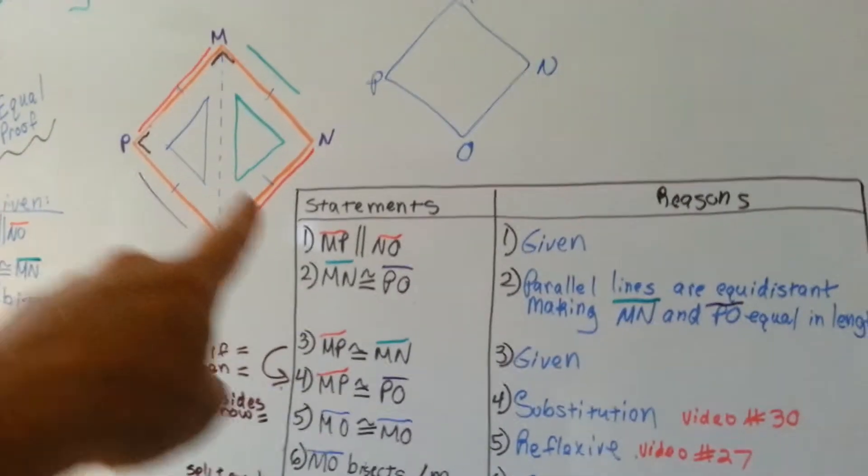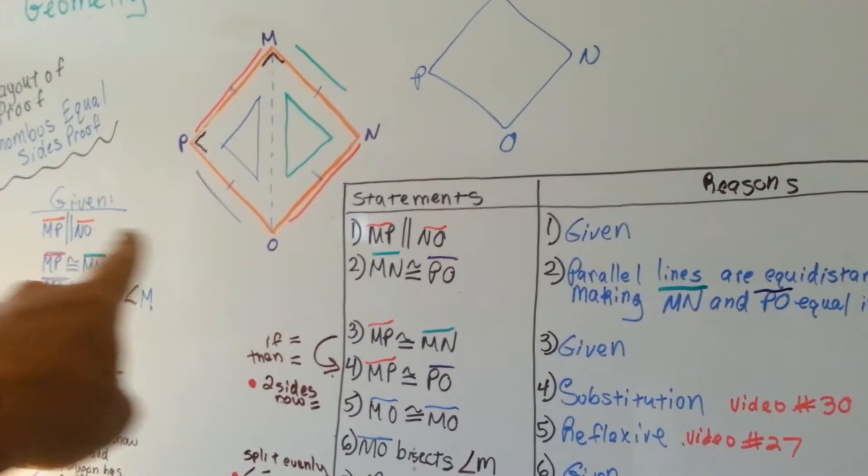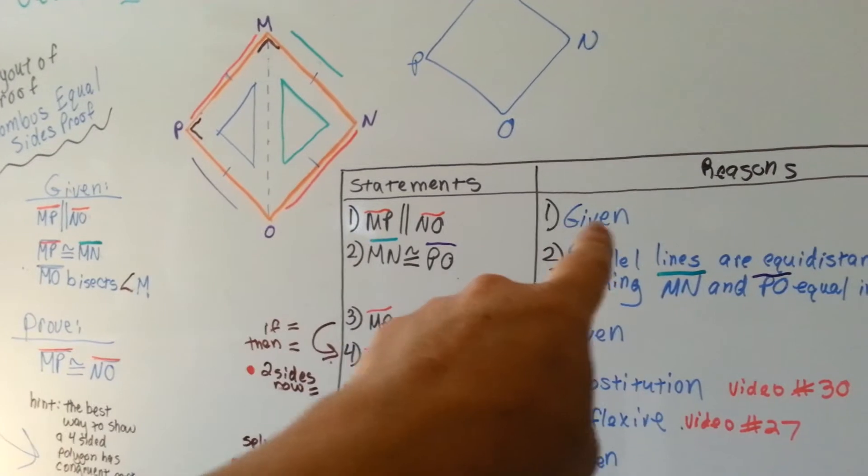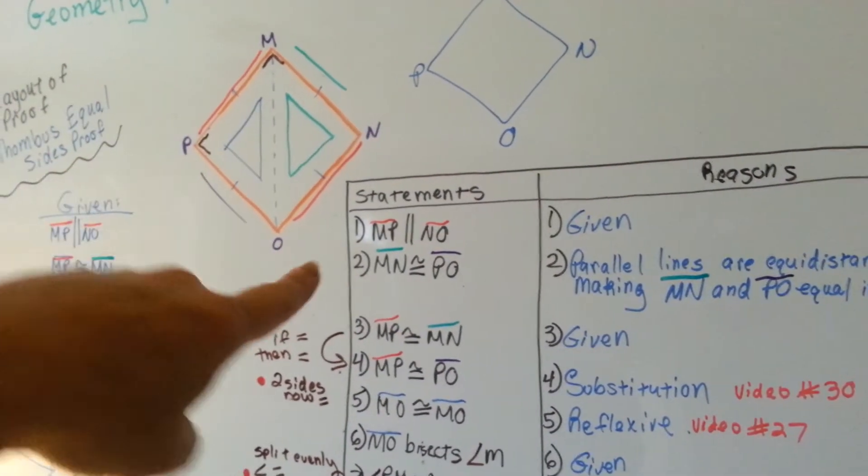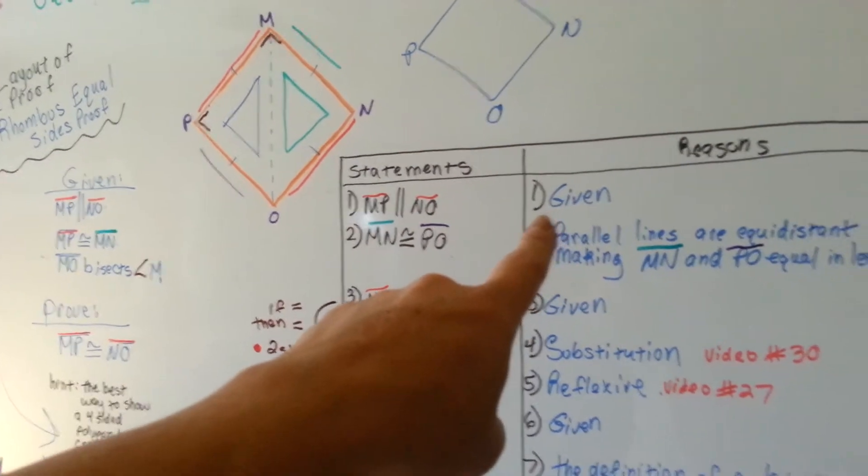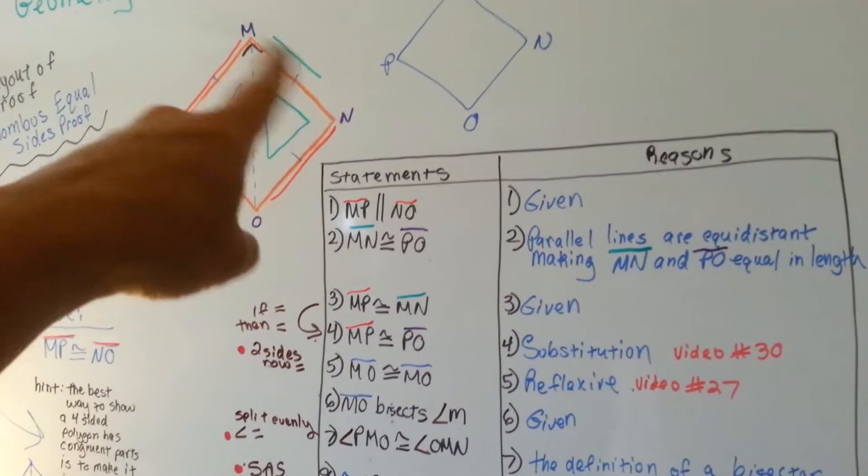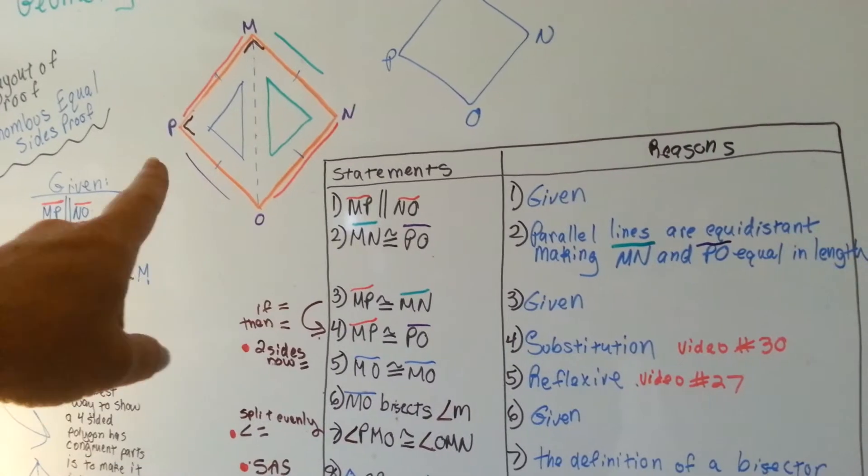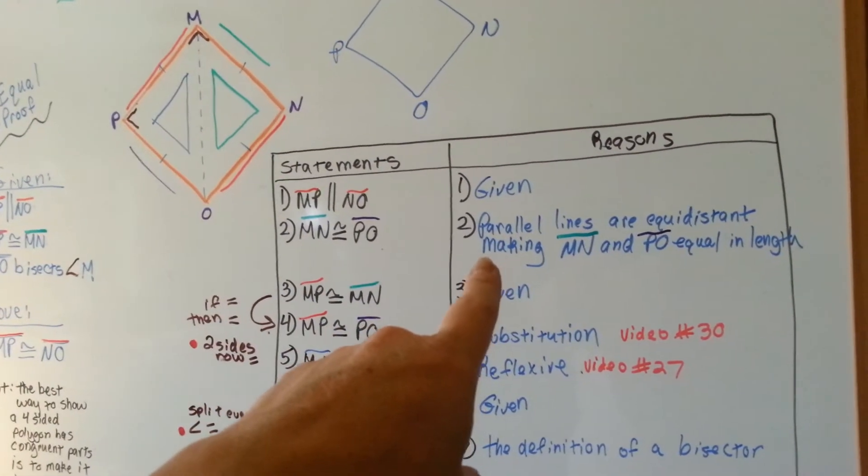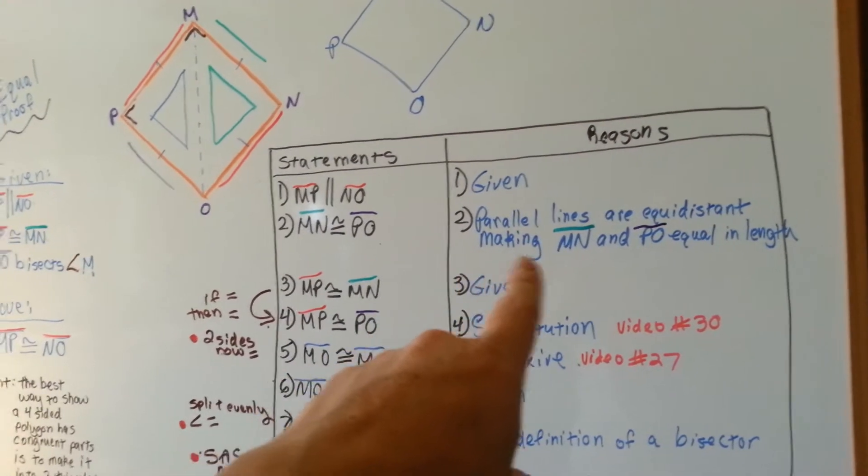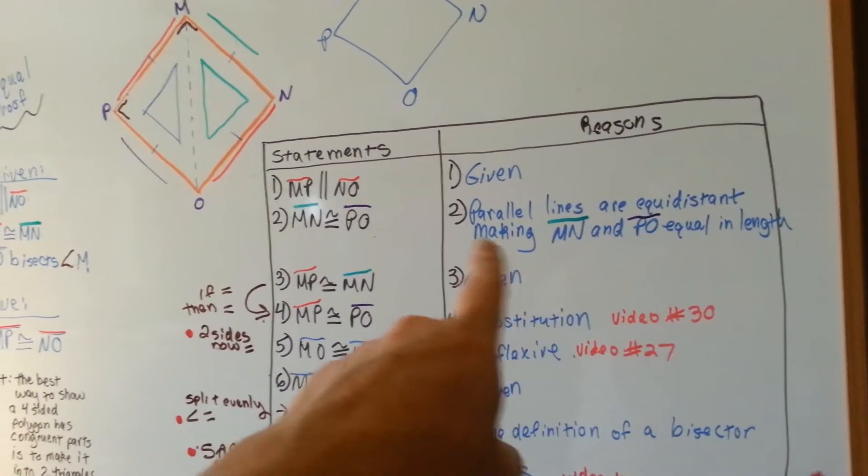So we have our drawing. MP is parallel to NO is given. MP and NO are parallel is given. MN, the green line, is congruent to PO, the purple line. That's because parallel lines are equidistant making MN and PO equal in length.